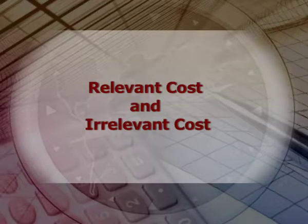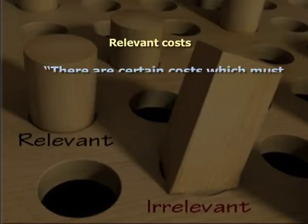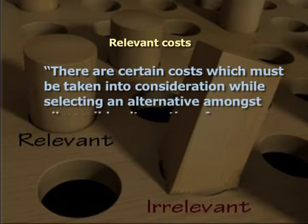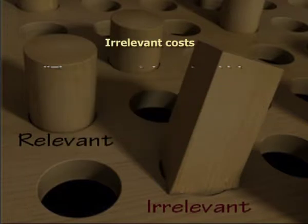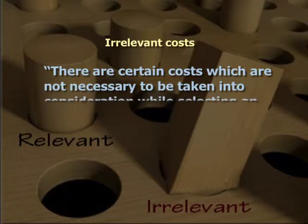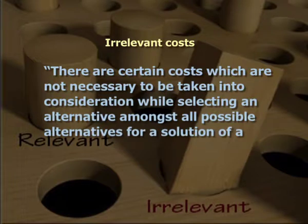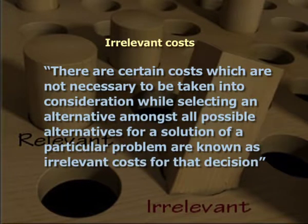In this context, let us understand relevant cost and irrelevant cost. There are certain costs which must be taken into consideration while selecting an alternative amongst all possible alternatives for a solution of a particular problem — these are relevant costs for that decision. For example, a company manufactures a product which requires a particular type of raw material. If the company has an option of manufacturing the same raw material in its own plant, the cost of manufacturing that raw material is a relevant cost. But if the same is purchased from outside, then the cost of transportation, travel, and insurance premium are also relevant costs.